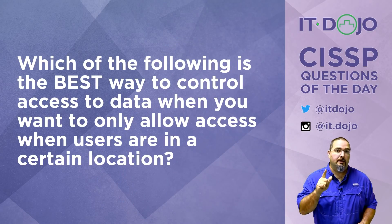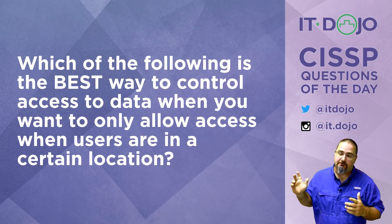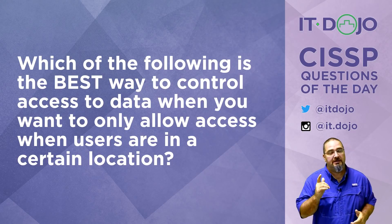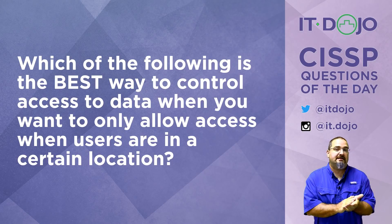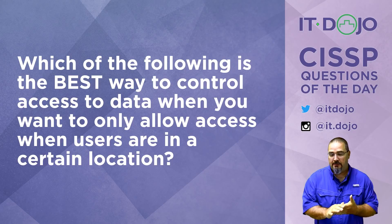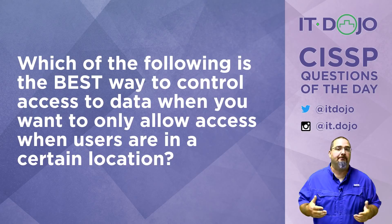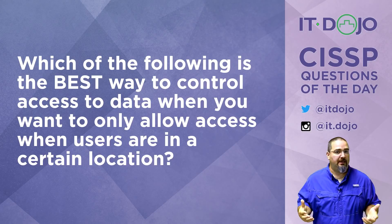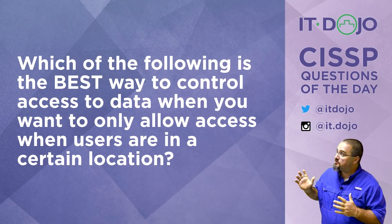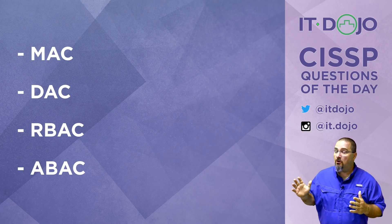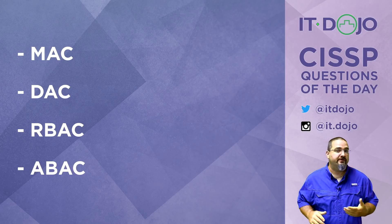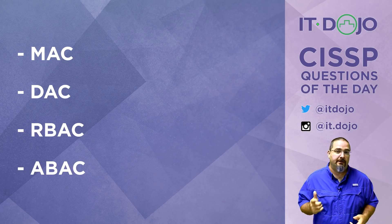Question number one: which of the following items is the best way for you to control access to data when you only want users to be able to access it when they're in a particular location? Go ahead and click pause if you need to, give it some thought, and when you're ready, click play and we will talk it through.